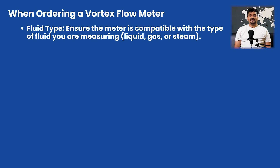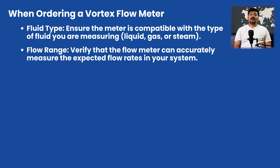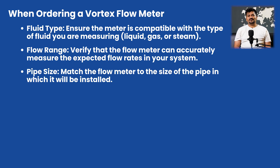When ordering a vortex flow meter, ensure you get the right meter for your specific application. Key parameters to consider: first, fluid type — ensure the meter is compatible with the type of fluid you are measuring, whether liquid, gas, or steam. Second, flow range — verify that your flow meter can accurately measure the expected flow rates in your system. Third, pipe size — match the flow meter to the size of the pipe in which it will be installed.